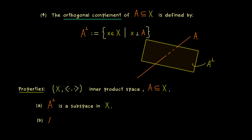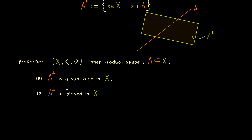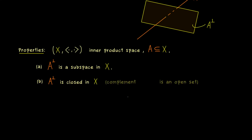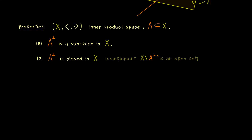The first property is that A⊥ is always a subspace in X — this comes from the linear algebra structure. But we also get something from the topological structure: namely, A⊥ is a closed set inside our inner product space, with respect to the induced norm and induced metric. This means the complement X without A⊥ is an open set, where openness is defined using epsilon-balls in the metric space. Since an inner product induces a norm and every norm induces a metric, this is well defined.